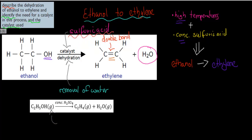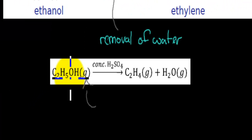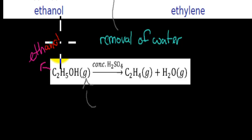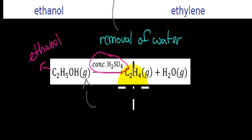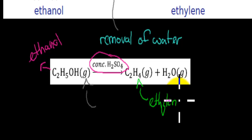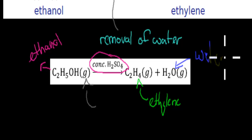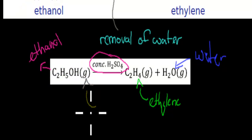Here I've got the chemical equation. C2H5OH is ethanol. In the presence of concentrated sulfuric acid, ethanol will turn into ethylene and also that water molecule. So the ethylene is shown here, and here's our water molecule. It's also important that it says gaseous — usually ethanol is actually liquid, but because of those high temperatures, we've made it into gas form.